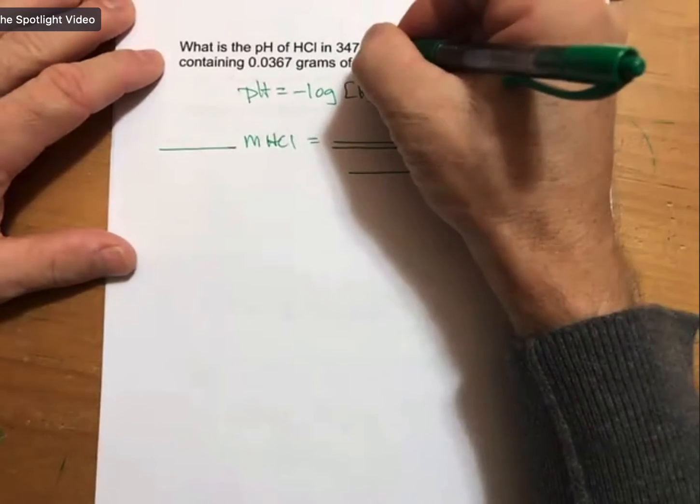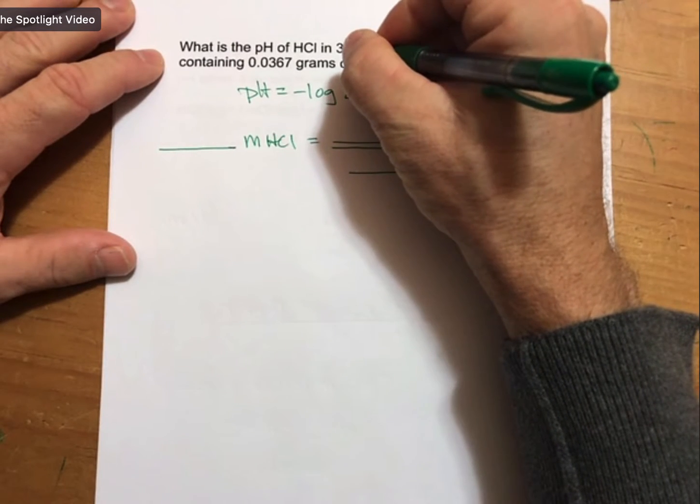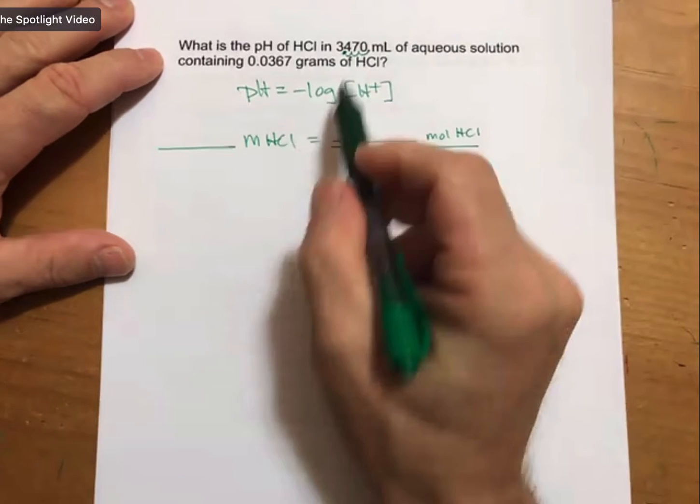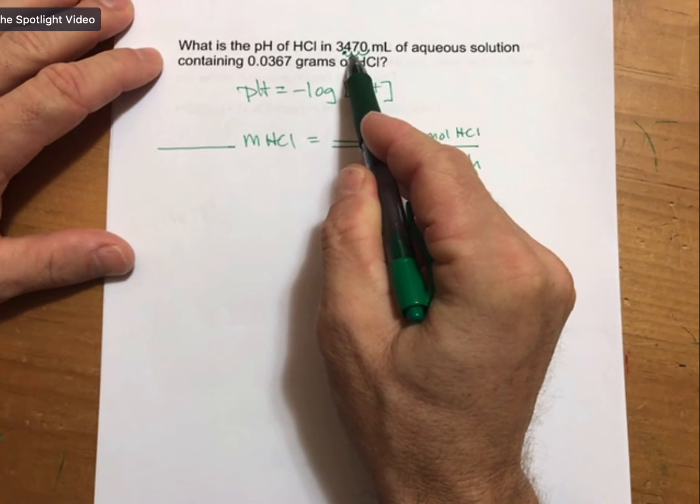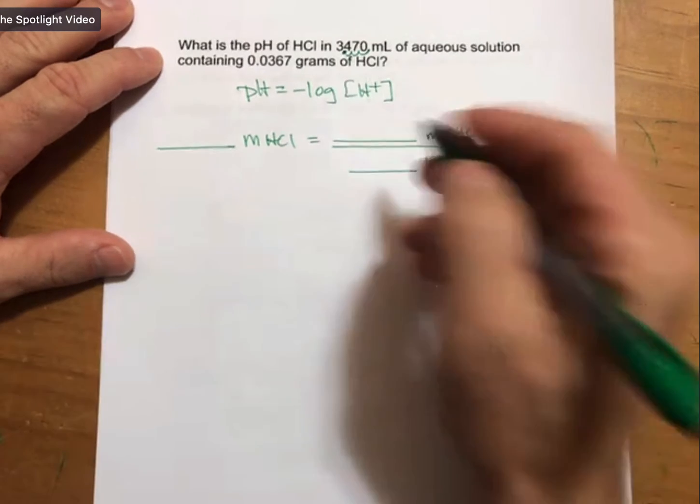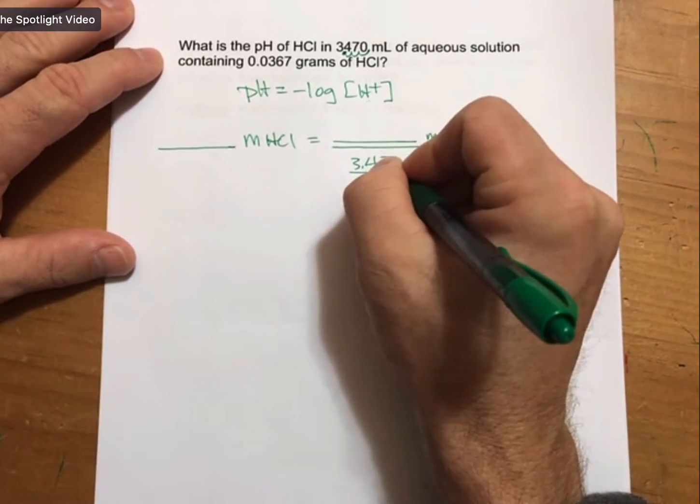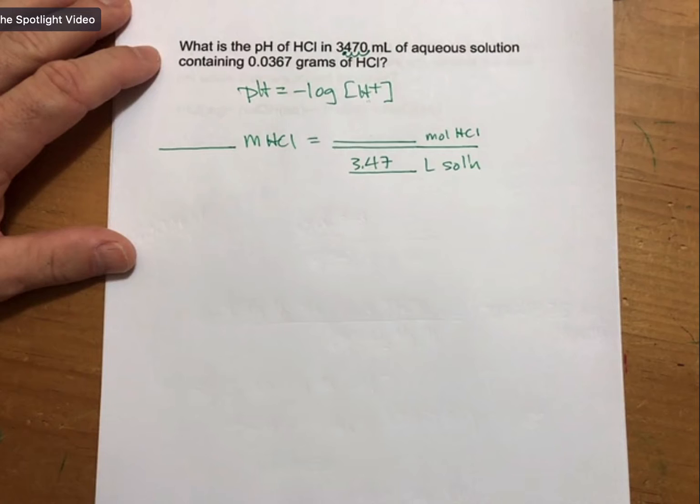I have 3,470 milliliters, but I move my decimal point to the left three places to get 3.47 liters.